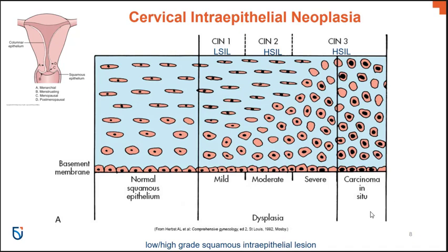Carcinoma in situ is generally a precursor to invasive carcinoma — that means the cancer has invaded the basement membrane. CIN 3 is not cancer, and in an upcoming slide you'll see the different levels that exist within CIN 3 before technical progression to carcinoma in situ.